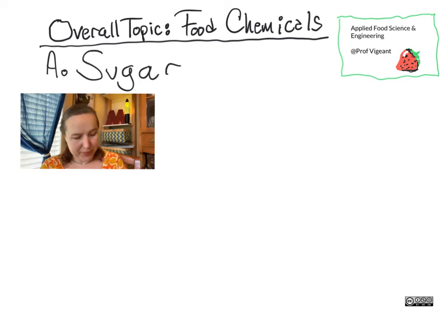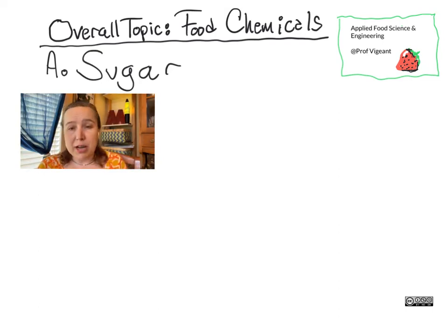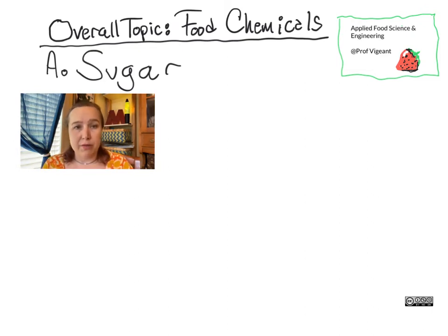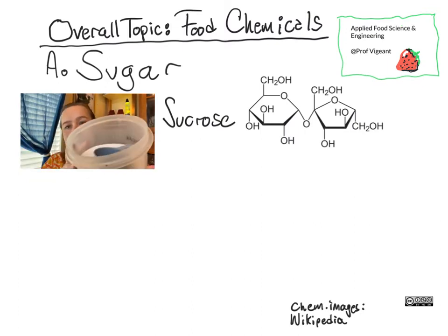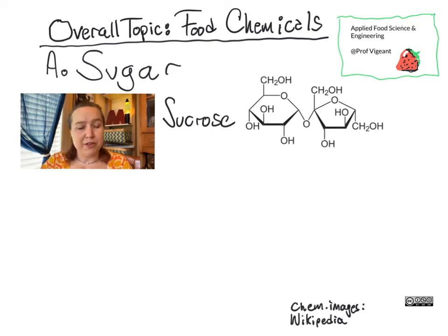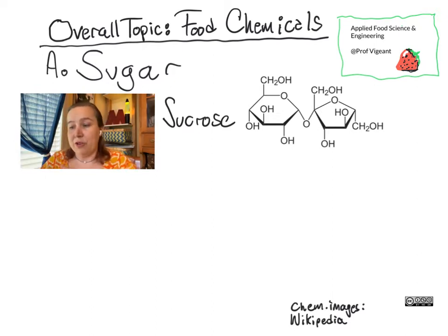Let's talk about sugar. When we talk about sugar, we are usually thinking of sucrose, which is a disaccharide that is almost entirely chemically pure — what you get when you squish sugarcane or sugar beets and then crystallize the juice you find inside.